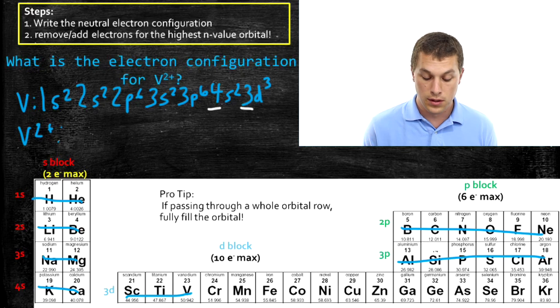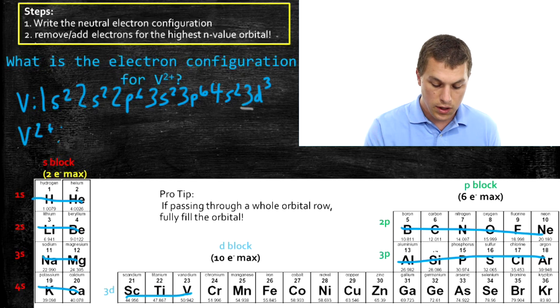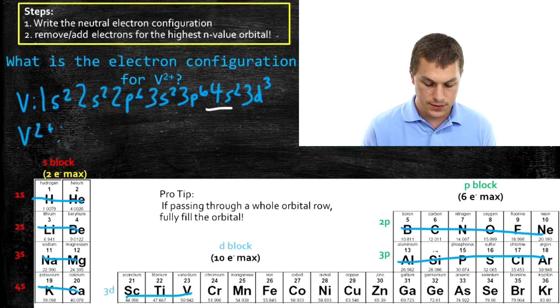And that's the 4S orbital, not the 3D orbital. So we actually get rid of the electrons in the 4S, and the 3D stays around.